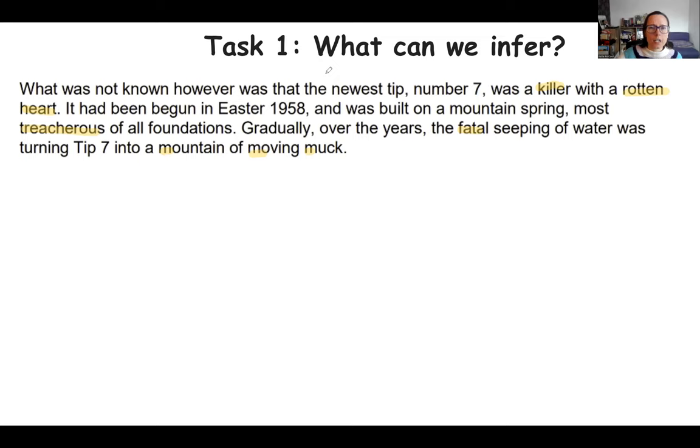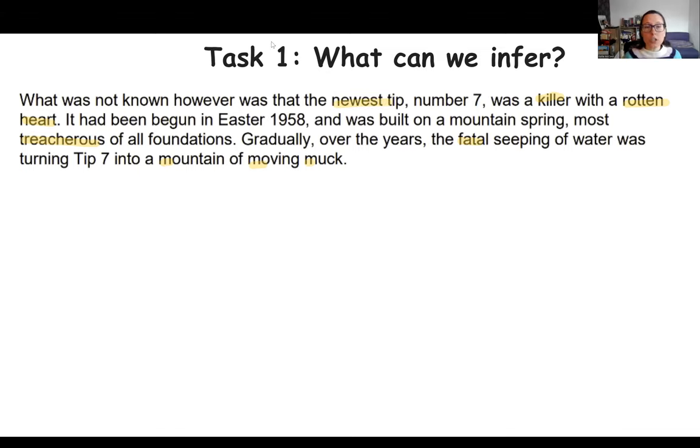And I would also look at actually newest, what are the connotations of newest? I don't know about you, but if I think of something new, I think of something innovative, something better than something that's old, something that's been made redundant. So with newest, this superlative, superlative is when you have the most of something, so it typically ends in EST. So here, the newest, the connotations of that are perhaps something innovative, something better. However, when juxtaposed with killer and rotten, it heightens the fact that actually this is a terrible tip to say the least. Does that make sense? And then treacherous, treacherous has connotations of betrayal. So again, it helps to create this image of tip number seven being a traitor to the inhabitants here in Aberfan. Does that make sense? So can you see what we're doing here?